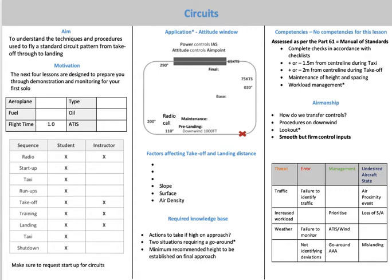I'll be doing the pre-flight for circuits. So the aim of this flight is to understand the techniques and procedures used to fly a standard circuit pattern from take-off through to landing. This brief aims to teach you how to fly a standard circuit pattern, specifically we'll have a look at the Bankstown Airport from take-off, I'll demonstrate the training and then through to landing.